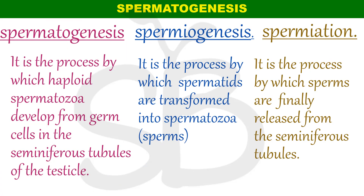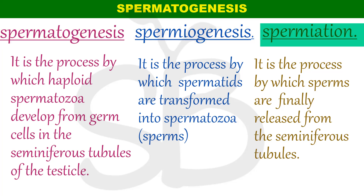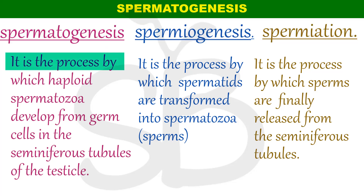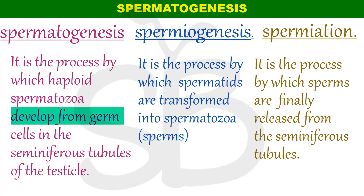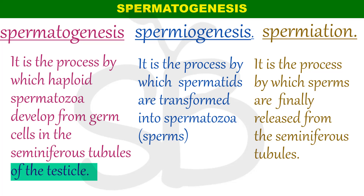Now we will learn three terms: Spermatogenesis, Spermiogenesis, and Spermiation. We will compare these three terms. Spermatogenesis is the process by which haploid spermatozoa develop from germ cells in the seminiferous tubules of the testicles — it covers the entire process from germ cells to sperm formation.